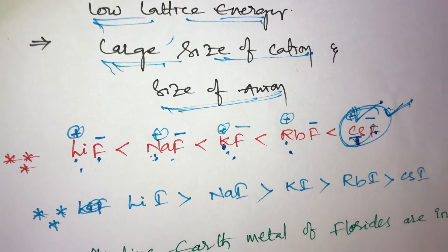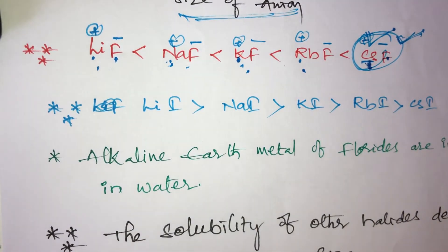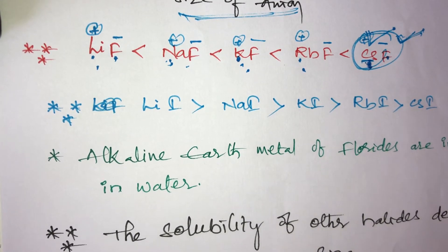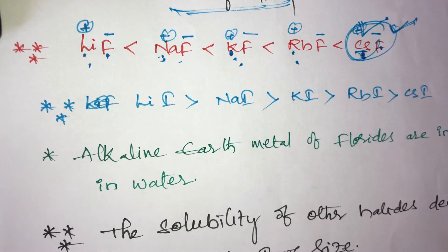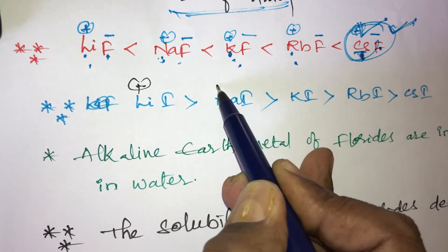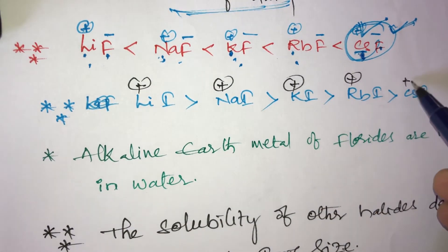Next, the second rule: size of anion. If anionic size is more, solubility will be less. However, if cationic size is small and anionic size is more, the compound is also highly soluble in water. For example, consider lithium, sodium, potassium, rubidium, and cesium with iodide anion.